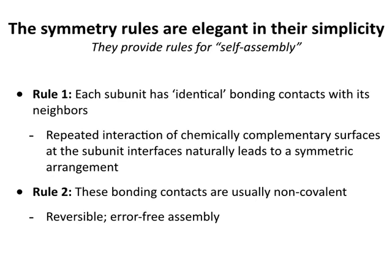The symmetry rules from Watson and Crick's work: first, each subunit has identical bonding contacts with its neighbors. The subunit is the single polypeptide chain that makes up the virus. Identical bonding contacts give you a symmetric arrangement — repeated interaction of chemically complementary surfaces in the same protein. Second, the contacts are non-covalent for the most part. Why? Because you have to take the particle apart to get the genome out — you don't want a covalently linked capsid. Also, during assembly, if you make mistakes you can reverse them and do it over again. So non-covalent bonding contacts are really important.